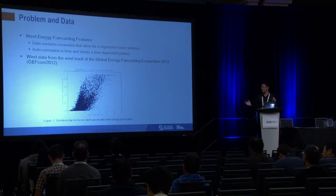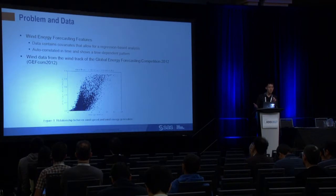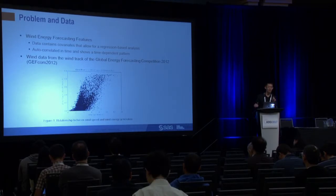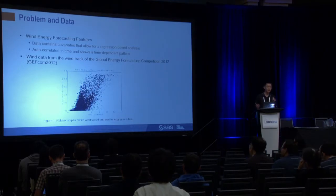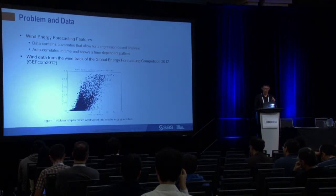Wind speed is a strong predictor in wind forecasting problems, but given a wind speed, because there are many potential confounding factors not being measured — such as air density, temperature, and humidity — you can still have a wide range of energy output. These unmeasured factors cause temporal dependencies in the output energy. That's why we are trying to incorporate both time series and machine learning methods to solve that problem.